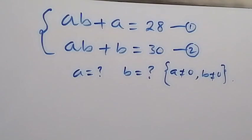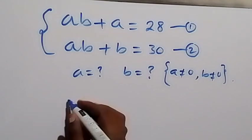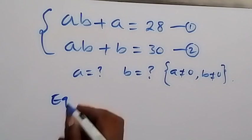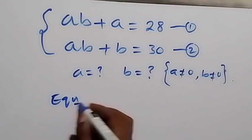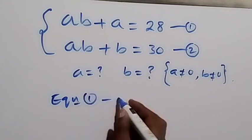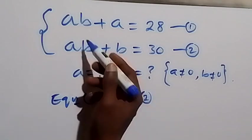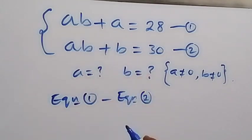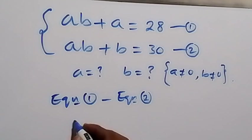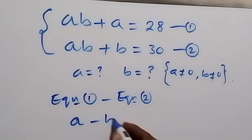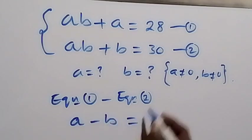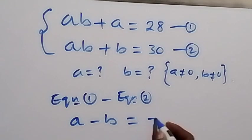And from here, let's subtract equation 2 from 1. So, we have equation 1 minus equation 2. Then, this will give us AB minus AB gone there. Then, A minus B, we have A minus B equals to 28 minus 30. That's minus 2.